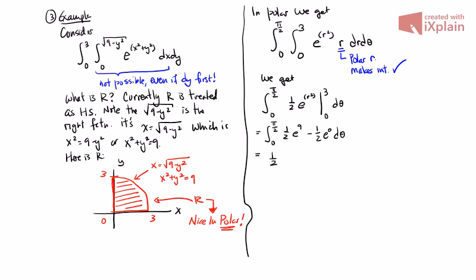So now everything is a constant though, so this is kind of nice. So we integrate this, we get 1/2 e to the 9 θ, this looks really weird, minus 1/2 θ, 0 to π/2. Plug those in, plug those in, 1/2 e to the 9 π/2 minus 1/2 π/2. When we plug in 0 here we get nothing, so this is our final answer.